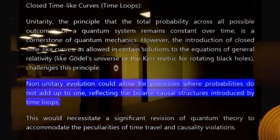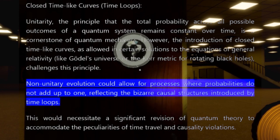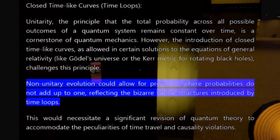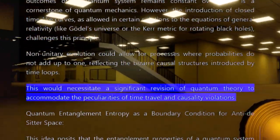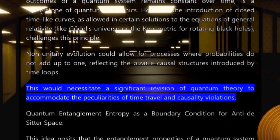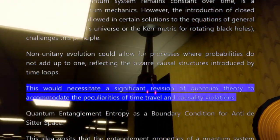Non-unitary evolution could allow for processes where probabilities do not add up to one, reflecting the bizarre causal structures introduced by time loops. This would necessitate a significant revision of quantum theory to accommodate the peculiarities of time travel and causality violations.